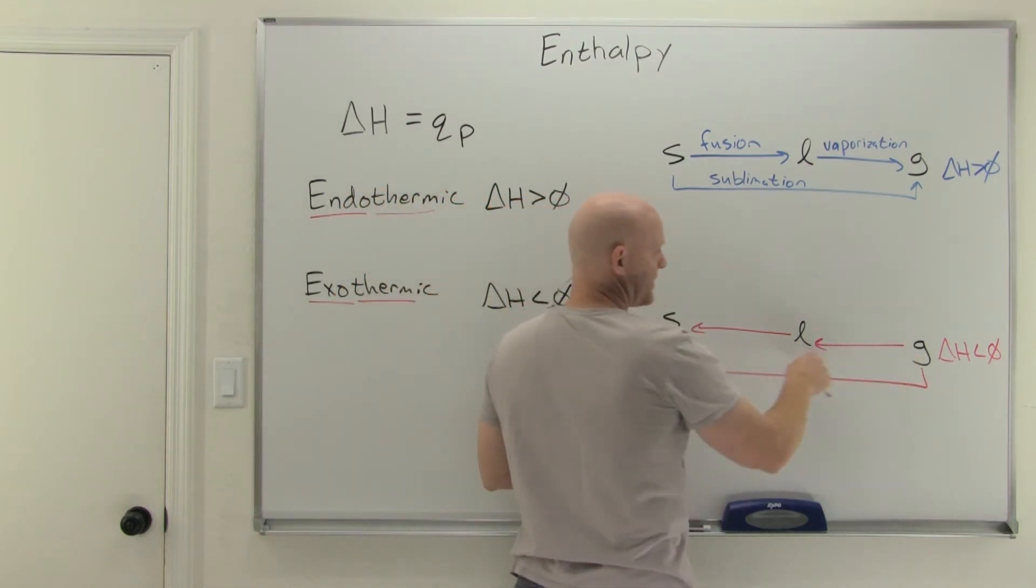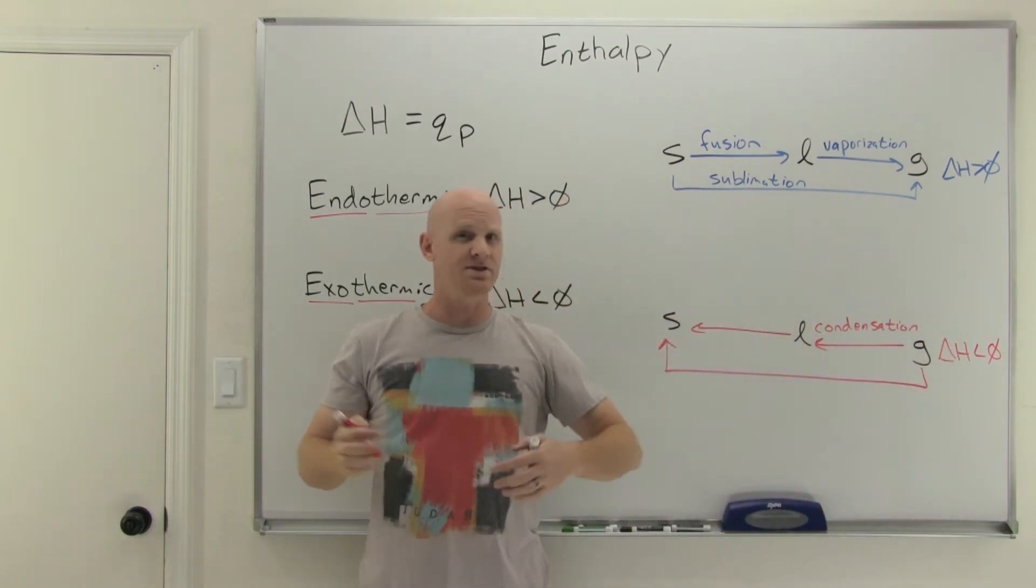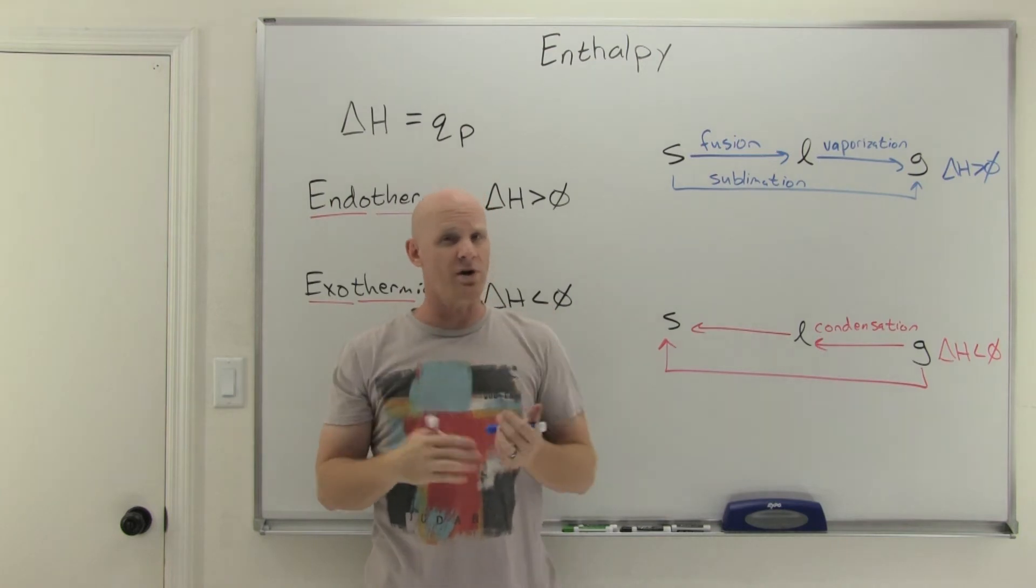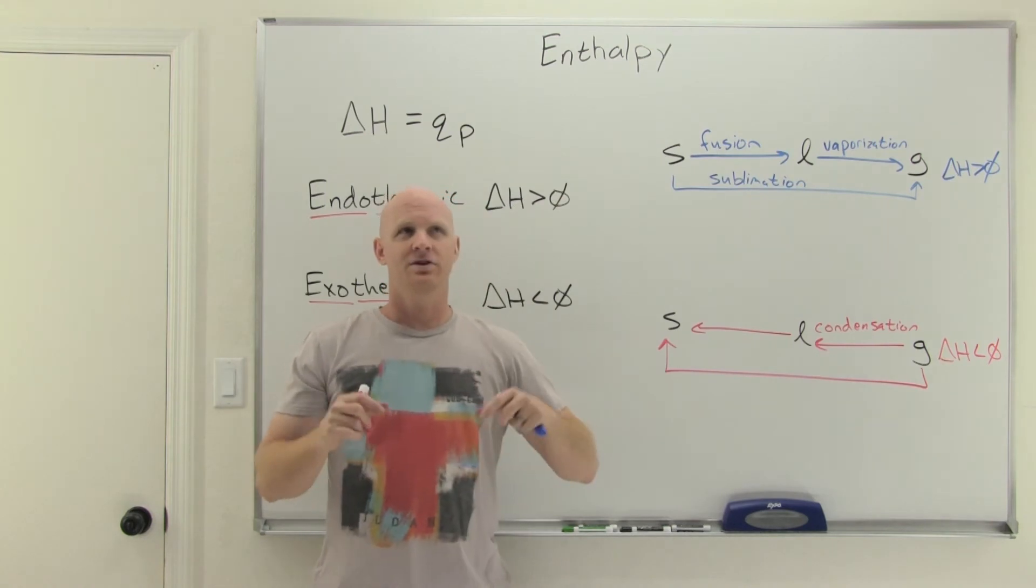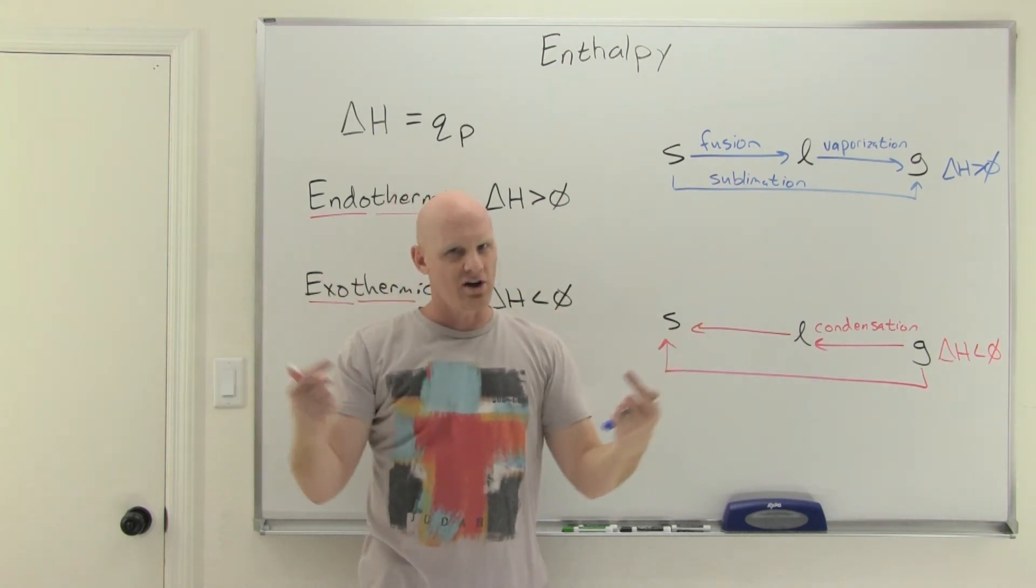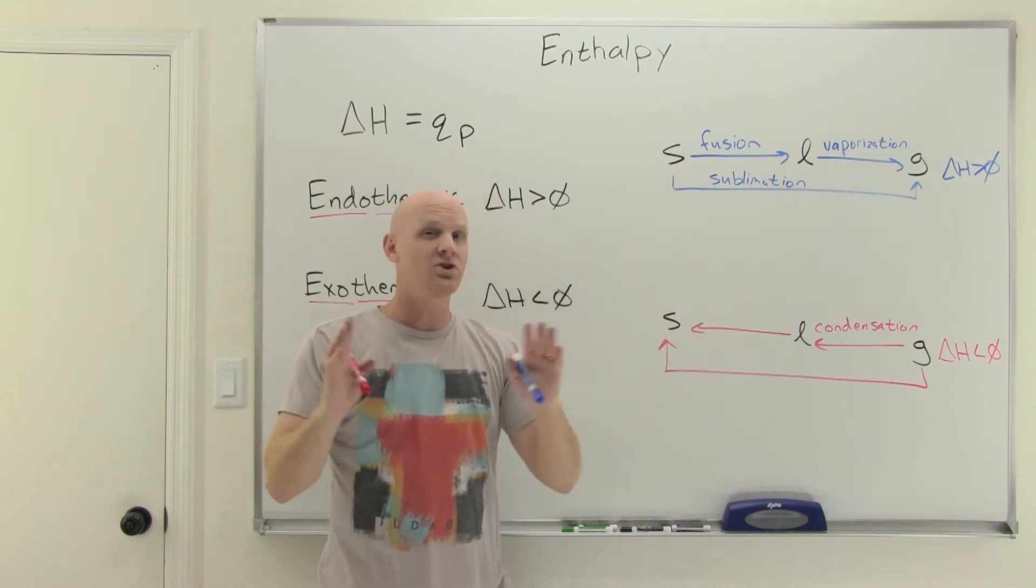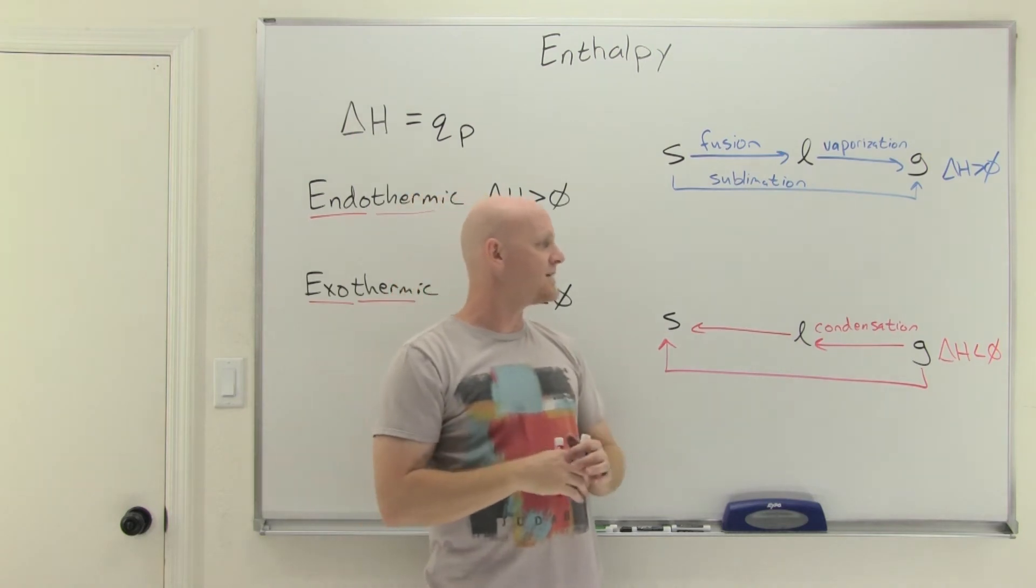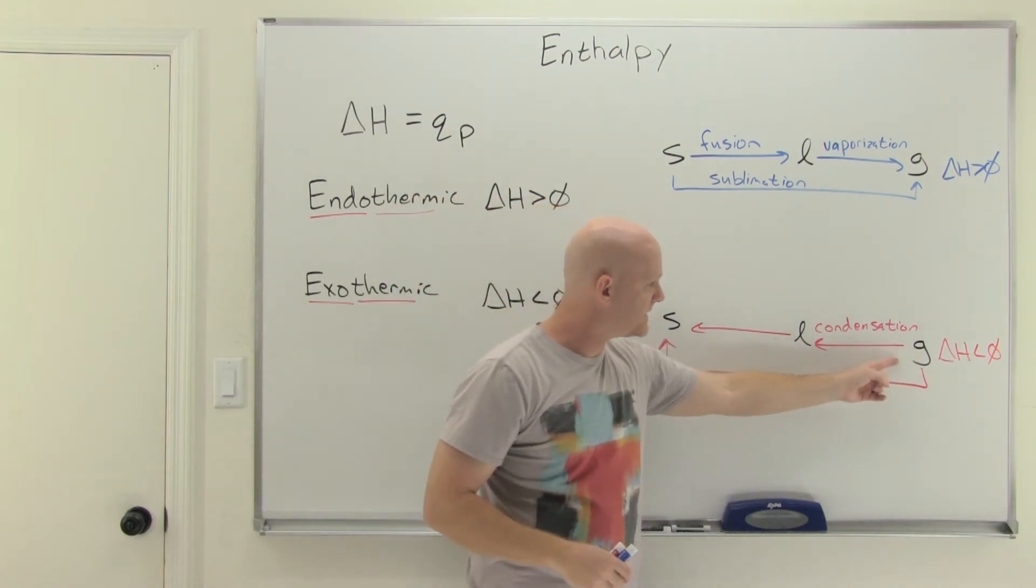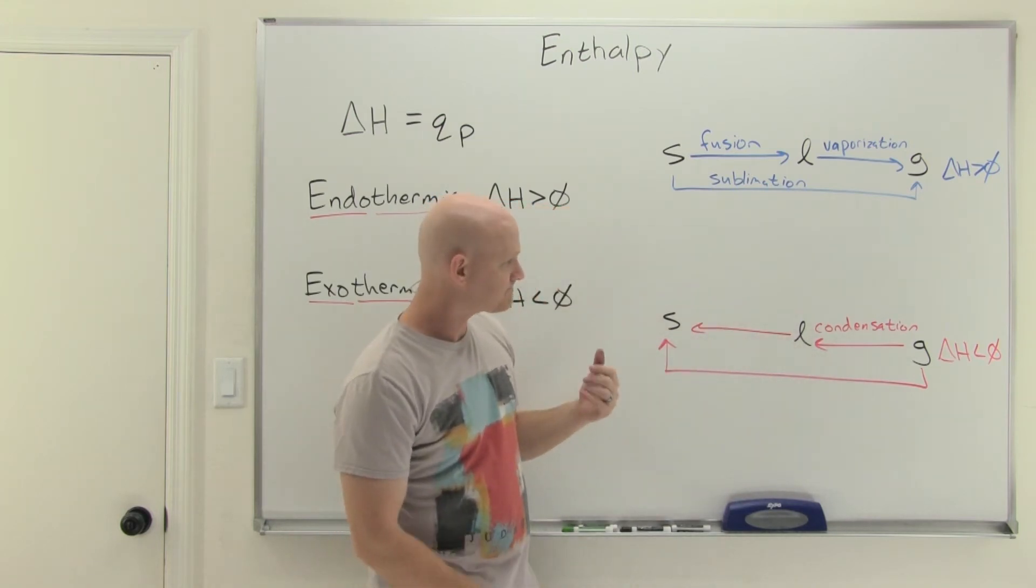For a gas turning into liquid, this is condensation. This is what happens on the outside of a cold glass of water on a humid day. You get condensation out there. I remember when I was a little kid, I used to think that somehow the water inside the glass was getting onto the outside of the glass. That's not the case. You've just got humidity in the air that's experiencing the cold temperatures right at the surface of the glass. Those colder temperatures are leading to the removal of heat, causing the gas to condense into a liquid.